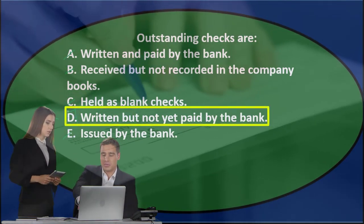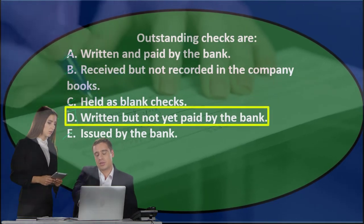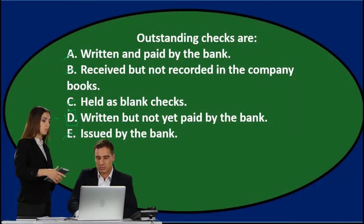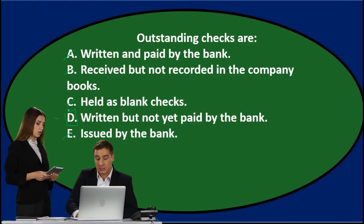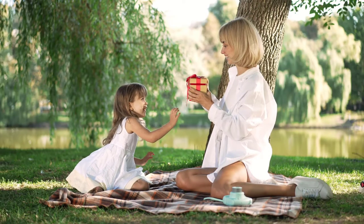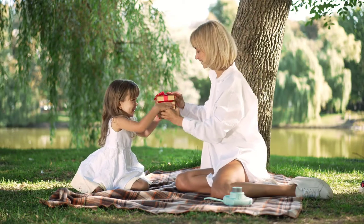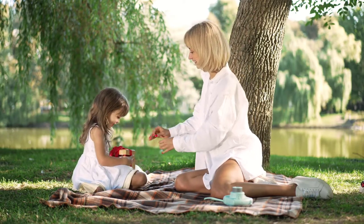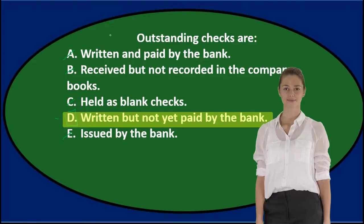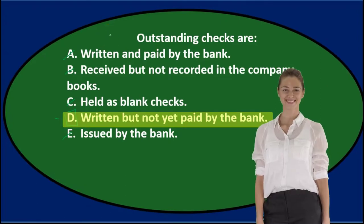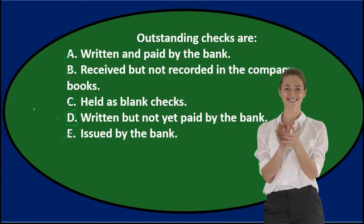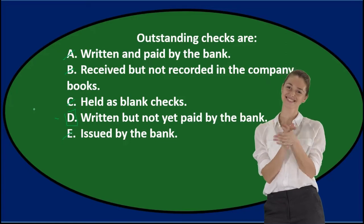The correct answer is D. Outstanding checks are written but not yet paid by the bank — we recorded it on our books and gave the check out, but it hasn't cleared the bank because the person receiving it hasn't deposited it yet. Correct answer: D — written but not yet paid by the bank.